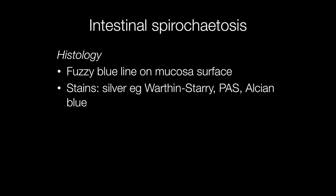Histologically, intestinal spirochetosis is seen as a fuzzy blue line on the surface of the colonic mucosa, but it may be easily missed by the less experienced microscopist. Useful stains for demonstrating the organisms are silver stains such as Warthin-Starry, but a particularly useful stain is the PAS. Alcian blue is also an alternative.